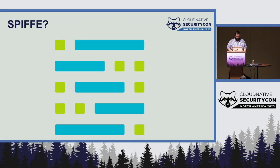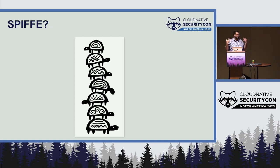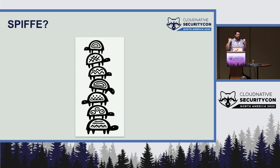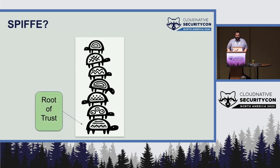SPIFFE also tries to solve what we call the bottom turtle problem. There's an apocryphal story of a man giving a lecture about the world floating through the universe, and an old lady said the world rests on the back of a turtle. He asked what the turtle rests on, and she said it's turtles all the way down. Once you have the concept of needing a secret, you need to protect that secret — with PKI, a public-private key — and you get into a cycle of protecting a credential with another credential. The bottom turtle is what we call our root of trust. There's always a root of trust in a system, even if it's not explicit. If you don't know what your root of trust is, you're trusting something you don't know the strength of.